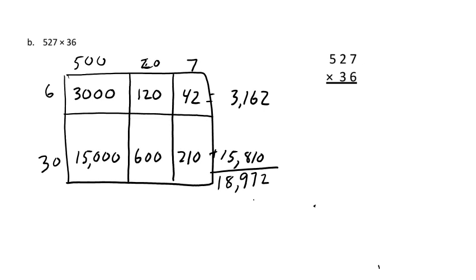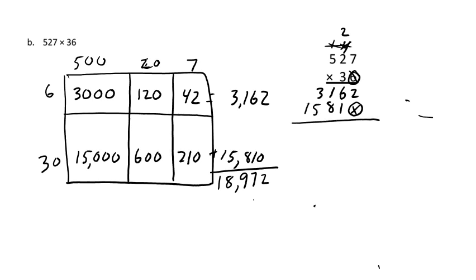Now the algorithm — multiply by 6 first: 6 times 7 is 42, carry the 4; 2 times 6 is 12 plus 4 is 16, carry the 1; 5 times 6 is 30 plus 1 is 31. Done with the 6 — put an X or 0 as placeholder. Now multiply by 3: 7 times 3 is 21, carry the 2; 2 times 3 is 6 plus 2 is 8; 3 times 5 is 15. Adding up: 2 plus 0, 1 plus 6, 1 plus 8, 3 plus 5, and a 1 — same answer, 18,972.